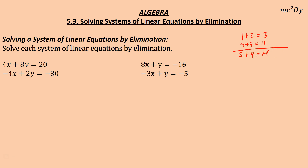So you can do that with equations. If I look at 4x plus 8y equals 20, and negative 4x plus 2y equals negative 30, I'm looking at the numbers in front of the variables. So 4 and negative 4 are opposites — they're both attached to x. By adding these, 4x plus negative 4x gives me zero x's. Those cancel out. If you add two equations together and don't eliminate one variable, you've wasted your time.